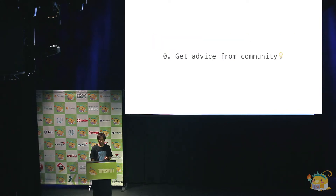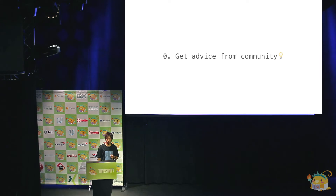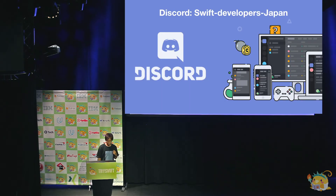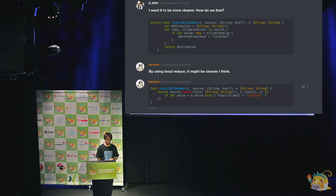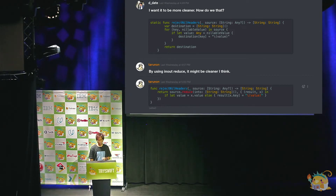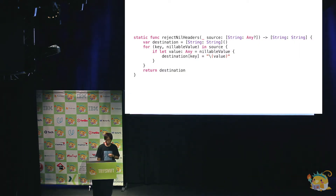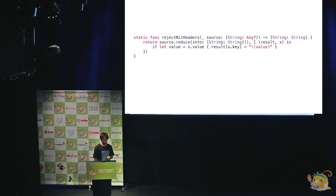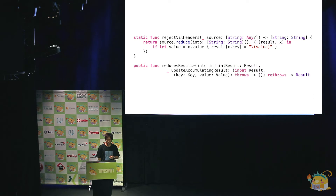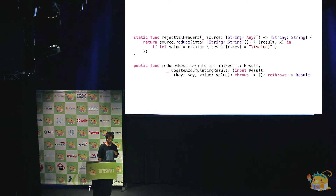My first action was getting advice from a community. In Japan, we have a community on Slack called Swift Dev Japan, mainly in Japanese, where we talk every day about Swift language, the compiler, and deeper themes. I posted my question and got an answer suggesting that using reduce(into:) would be cleaner. This approach changes the code into one line and makes it faster by using reduce(into:), which was introduced in Swift 4. By using the inout keyword on the result, we can iterate values with a pointer — much faster than copying the dictionary to a new one.